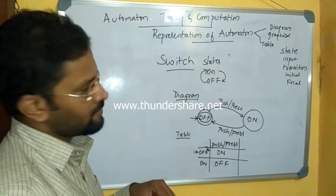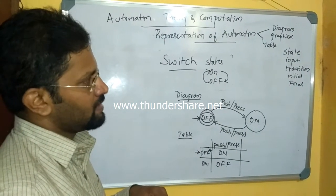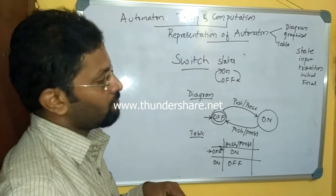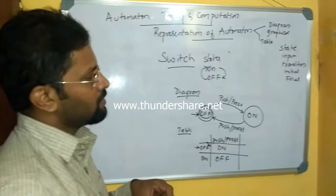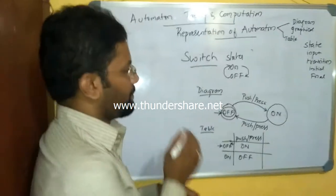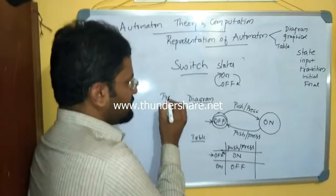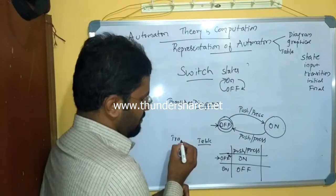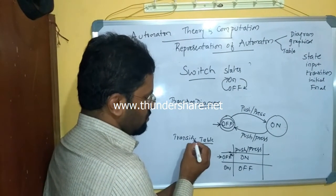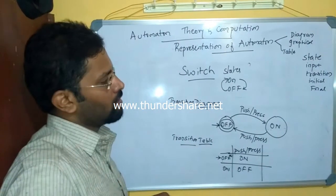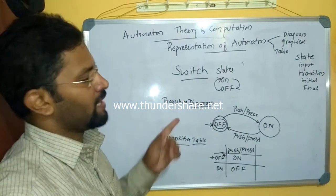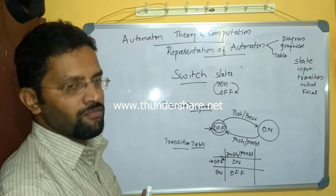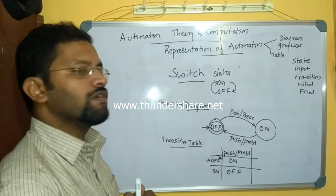So we discussed different ways of representing an automata. One is called a transition diagram — the graphical representation — and the other is called a transition table — the tabular representation. We covered how to write a transition diagram, how to write a transition table, and used the switch as an example of an automata. Thank you.